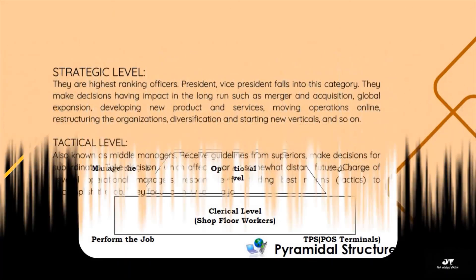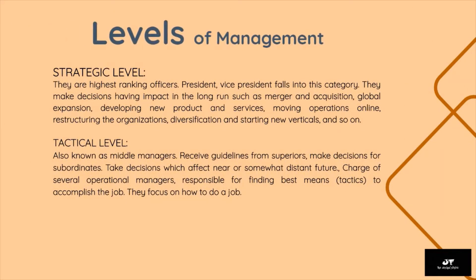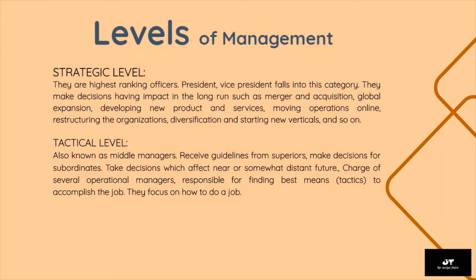At the strategic level are the highest ranking officers — president, vice president — who make decisions having long-run impact, such as merger and acquisition, global expansion, developing new products and services, moving operations online, restructuring the organization, diversification, and starting new verticals. At the tactical level, also known as middle managers, they receive guidelines from superiors and make decisions for subordinates. They take decisions affecting the near or somewhat distant future, are in charge of several operational managers, and are responsible for finding the best means and tactics to accomplish the job. They focus on how to do a job.